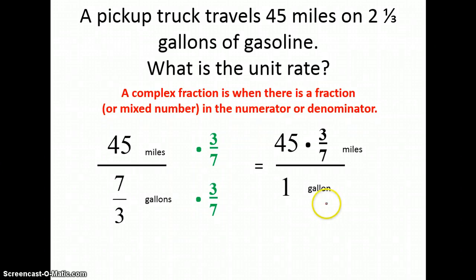This will give me a one in the denominator, which is what I'm looking for if I'm finding a unit rate. And then I'd have to multiply 35 times three-sevenths, which will give me 19 and two-sevenths miles for one gallon. Or, it can be written 19 and two-sevenths miles per gallon. Either of these solutions can be written either way.